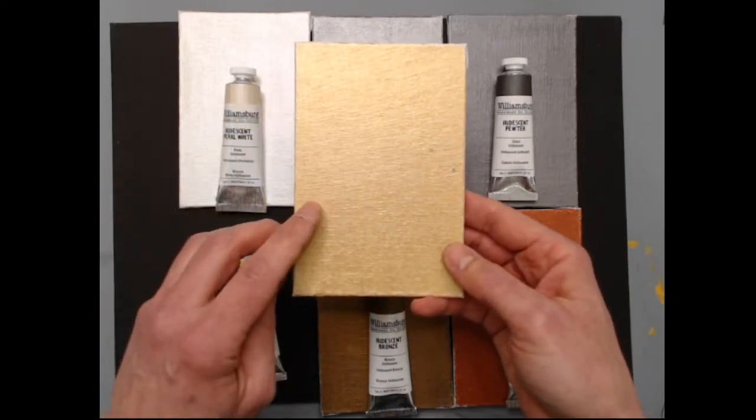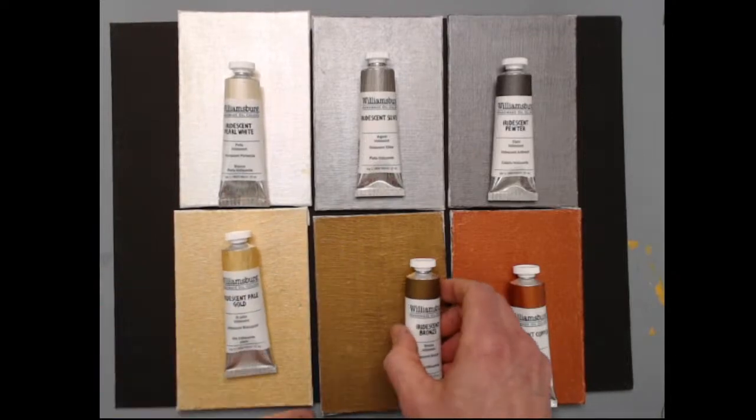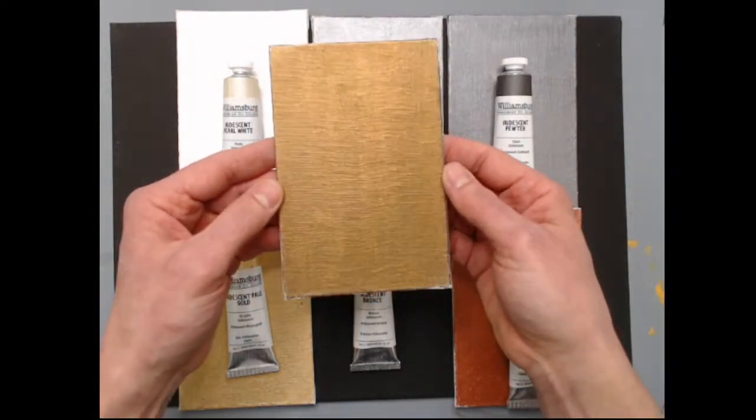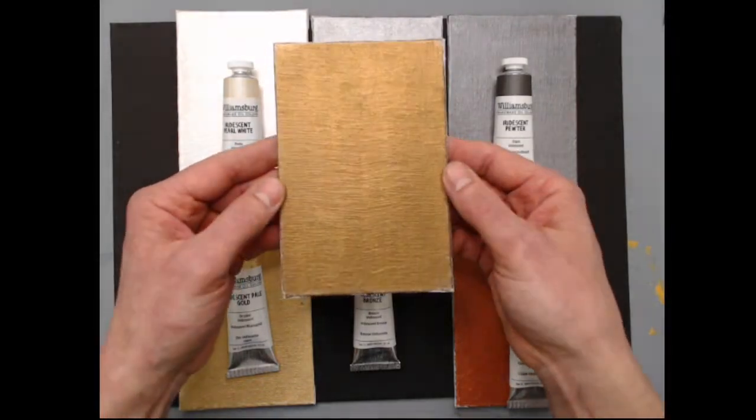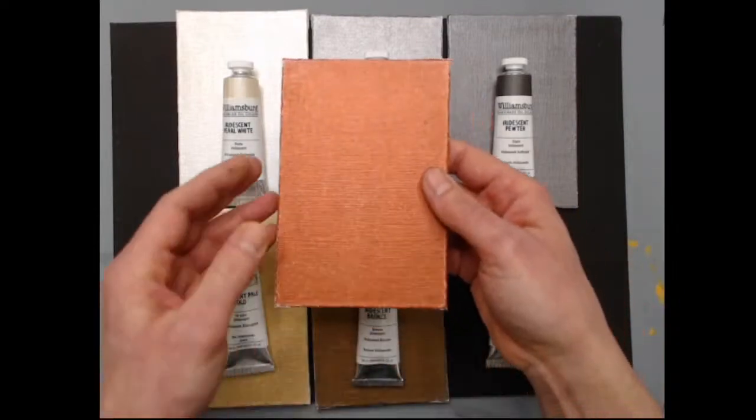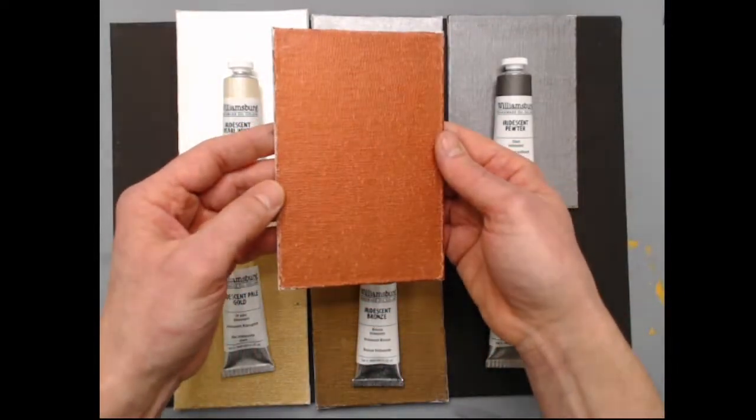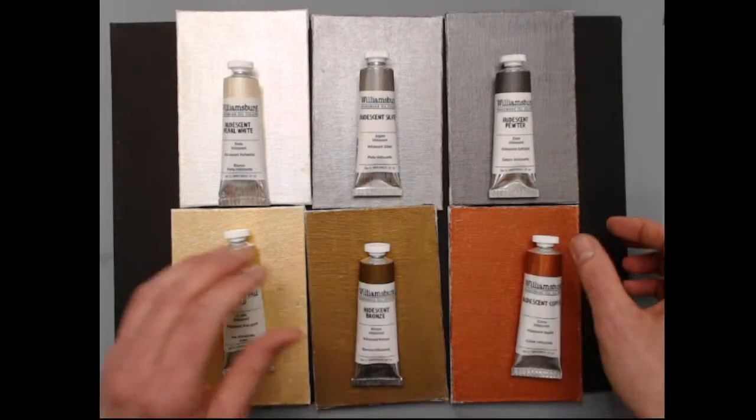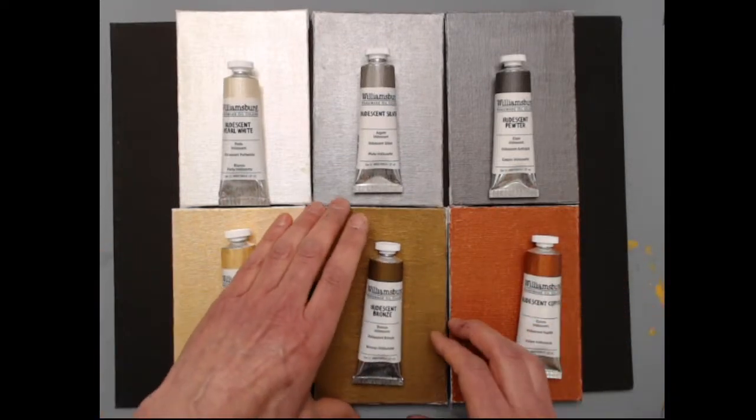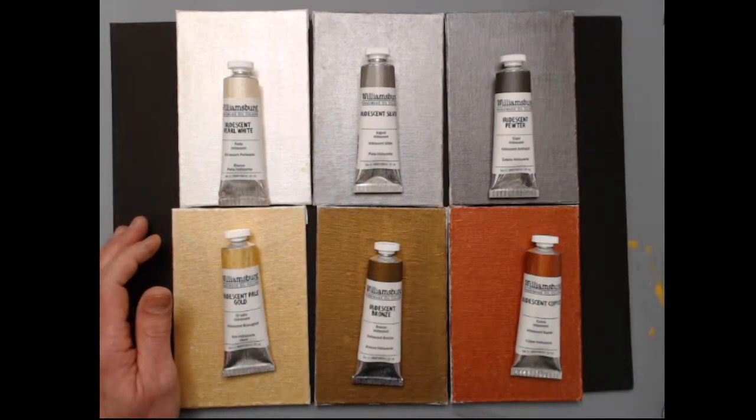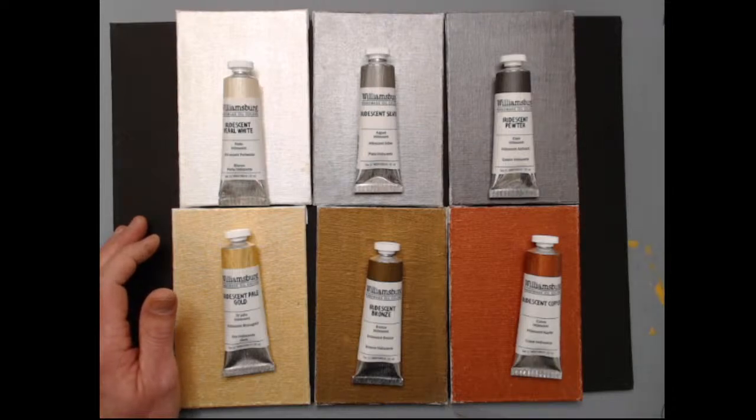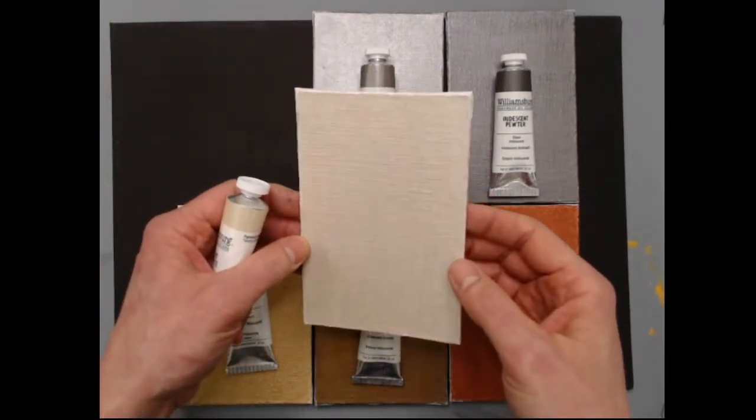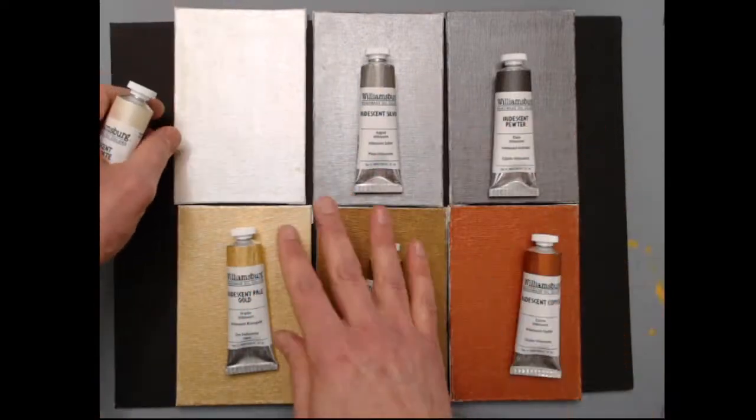There's that iridescent pale gold. These are the same pigments that we use over on the golden side for our iridescent colors. Bronze is almost like a slightly tarnished bronze, just after polish and that bronze ages, a slight patina. And then copper right here, that beautiful copper color.